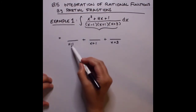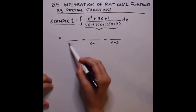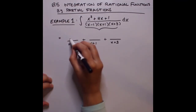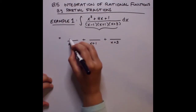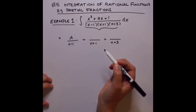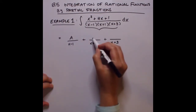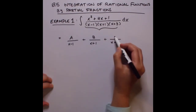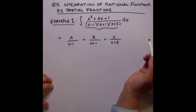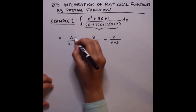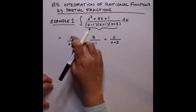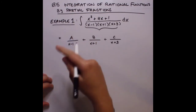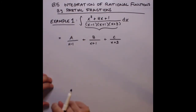Whenever your denominator is linear — x to the first power — then your term on top is to the zero power, so think of that as a constant. Technically this is like a times x to the zero, which is a times one, and we don't even write that because you always go one power less in the numerator than what you have in the denominator.